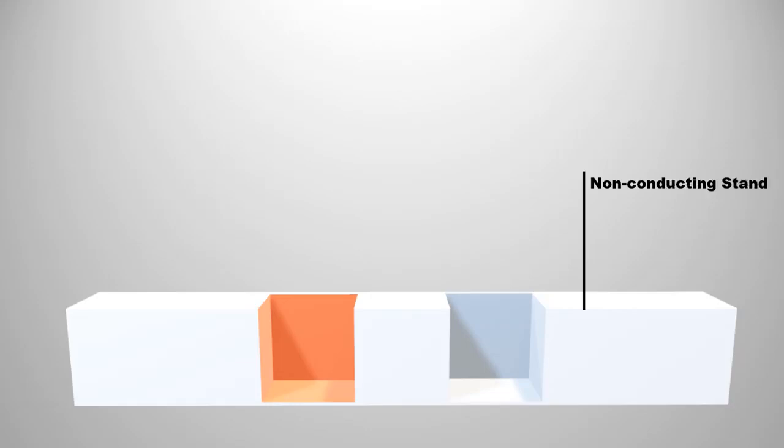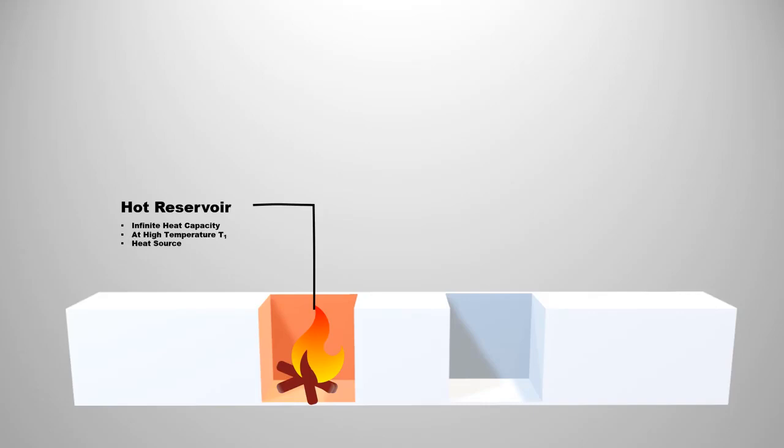The Carnot engine has three main parts. First, an insulated non-conducting stand so that the transfer of energy is not possible. Second, a hot reservoir with infinite heat capacity. Heat capacity is infinite so that the temperature of the reservoir remains constant after taking any amount of energy from it. It is also called heat source.